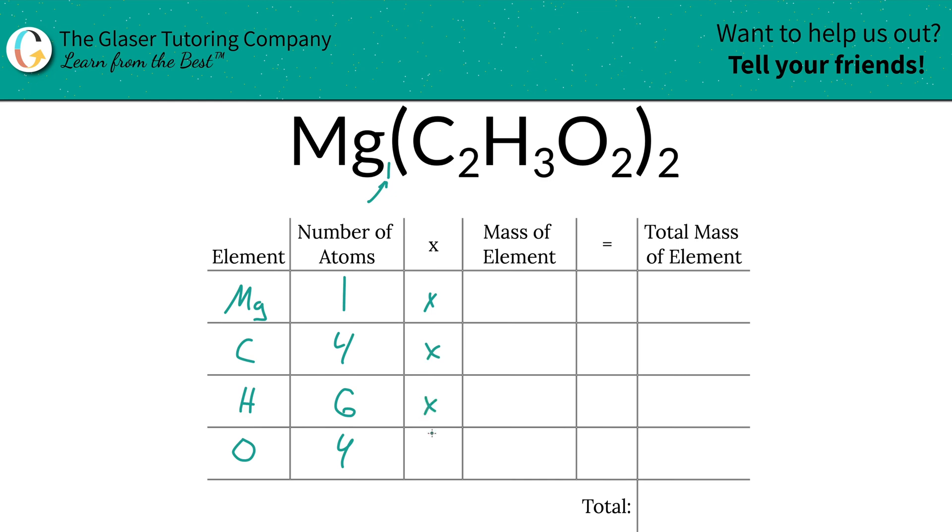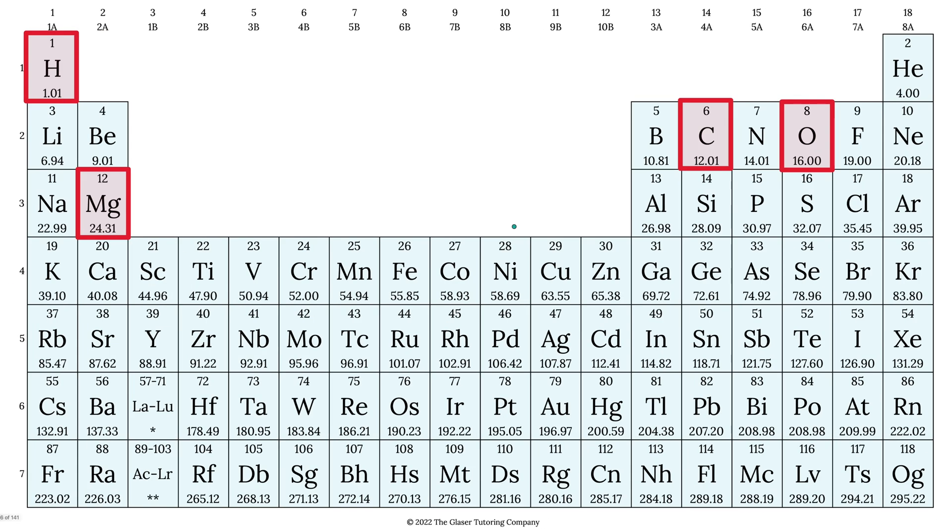Then simply multiply those number of atoms by the mass of each particular element. These masses are found on the periodic table. Magnesium is 24.31, hydrogen is 1.01, carbon is 12.01, and oxygen is 16. So those are the values we're going to write down.